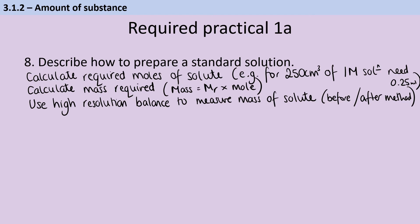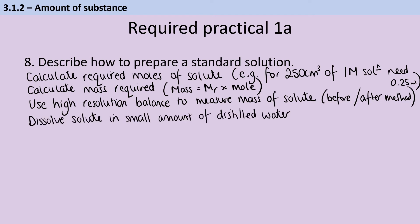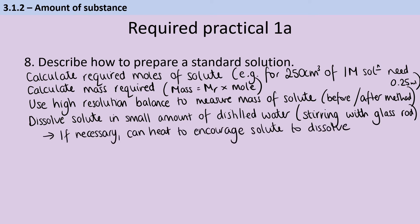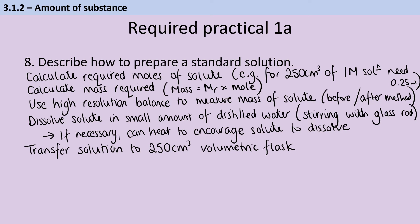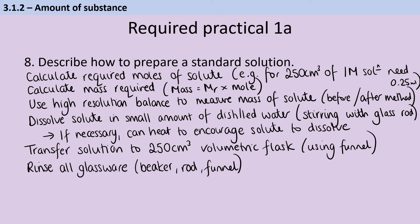Dissolve that solute in a small amount of distilled water, stirring with a glass rod to make sure it dissolves. It may even be necessary to heat it gently. Once dissolved, transfer it to a volumetric flask — usually 250 cm³ — using a funnel. It's then really important to rinse all your glassware: the beaker used for initial dissolving, the glass rod, and the funnel, because all will have small amounts of solute on them. Rinse them with a wash bottle and transfer those rinsings to the flask.